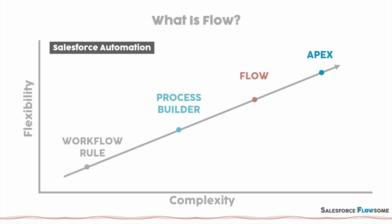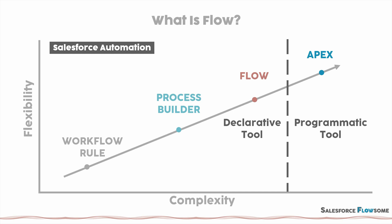But there is also another important factor. If we look at flow and Apex, we can actually draw a line between them. To the left, this is what we call the declarative tool. And to the right, this is the programmatic tool. A declarative tool means that you only need to focus on the logic construction, while a programmatic tool means you have to really code. So we can conclude that flow is the most flexible yet complex declarative tool in the Salesforce automation spectrum.